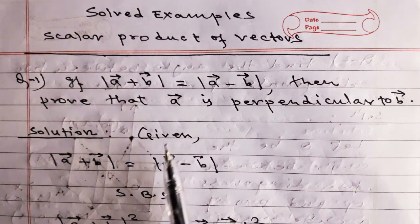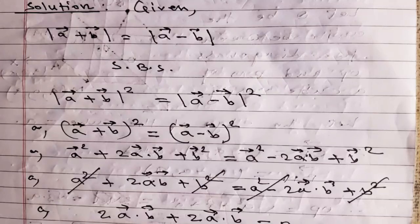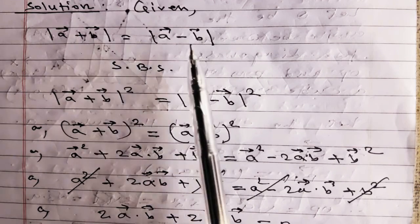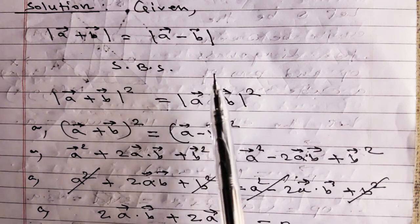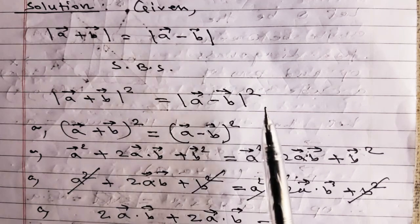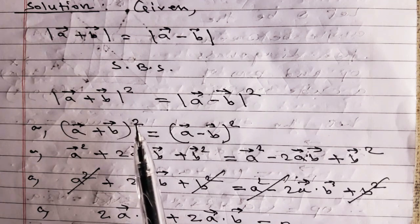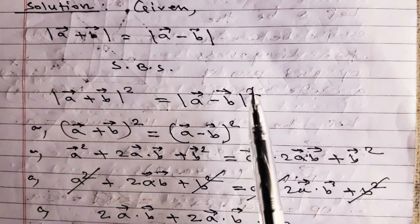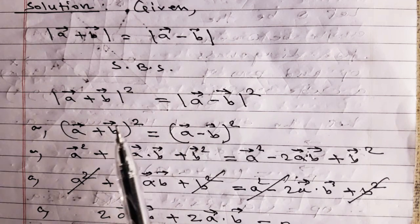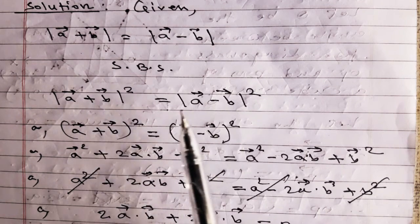Given: magnitude of vector A plus B is equal to magnitude of vector A minus B. We have to show that vector A and vector B are perpendicular to each other. We solve it by squaring on both sides. We know that the square of the magnitude of any vector is equal to the square of the given vector, and vice versa.